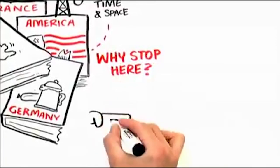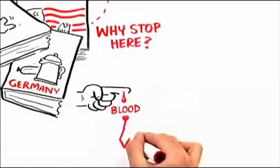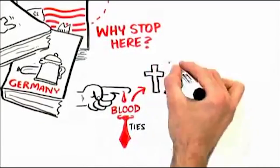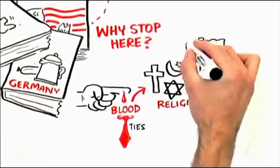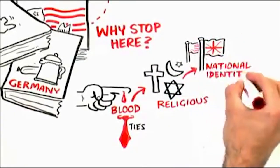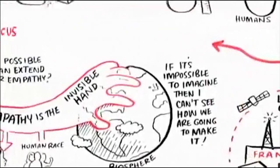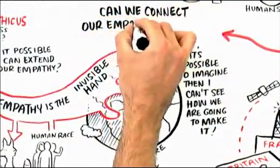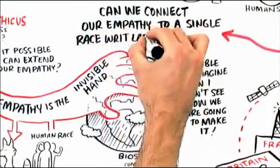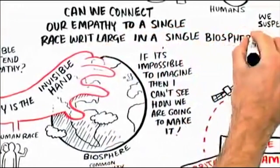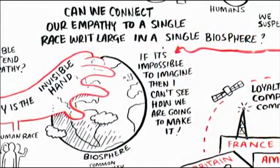But if we have gone from empathy in blood ties to empathy in religious associational ties to empathy based on national identification, is it really a big stretch to imagine the new technologies allowing us to connect our empathy to the human race writ large in a single biosphere? And what reason would we stop here at the nation state identity and only have ideological empathy or theological based empathy or tribal based blood tie empathy?